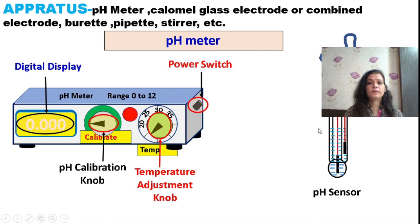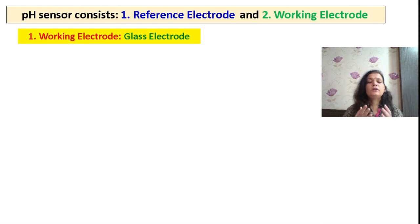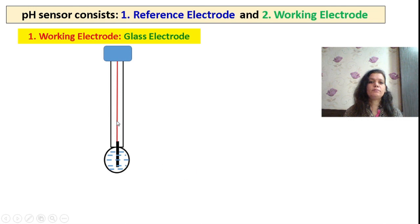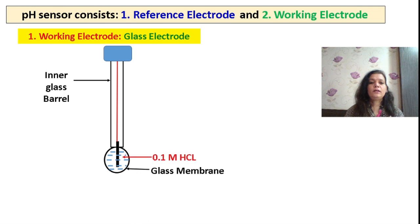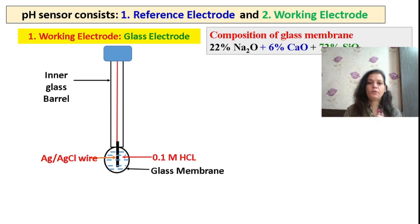The glass electrode, or pH sensor, is a combination of a working electrode and a reference electrode. The reference electrode has a known constant potential. Common reference electrodes include the hydrogen electrode, calomel electrode, and silver electrode. Calomel or silver is combined with the working electrode to form the glass electrode. The glass electrode consists of a glass tube with a glass membrane containing 0.1 N HCl solution, where ion exchange takes place, and a silver wire dipped in a chloride solution forming a half cell.